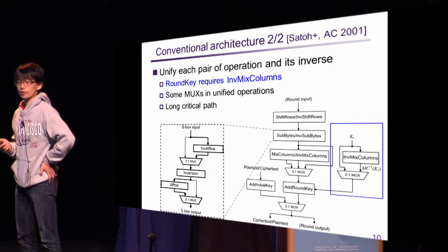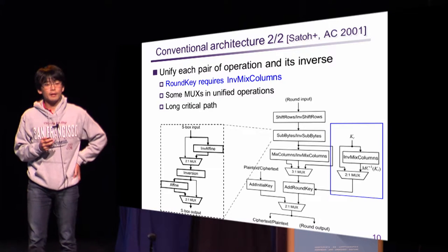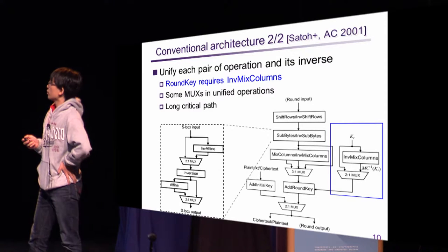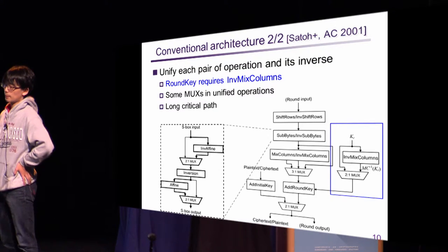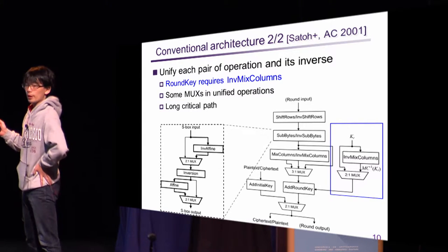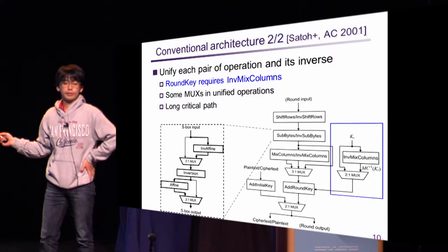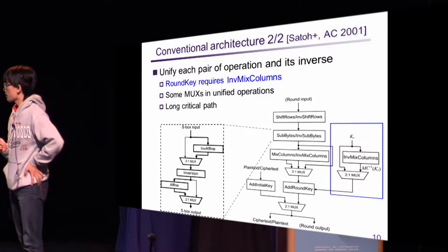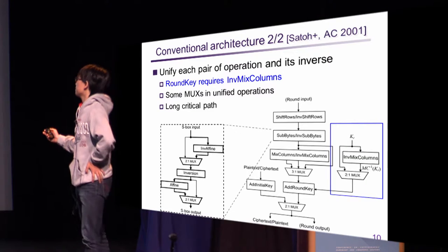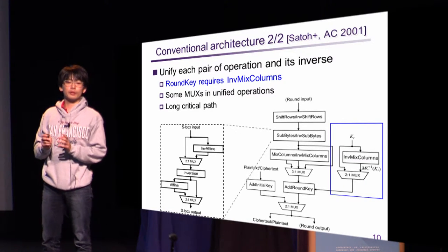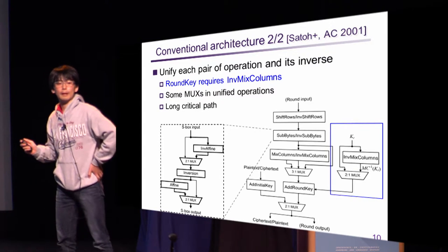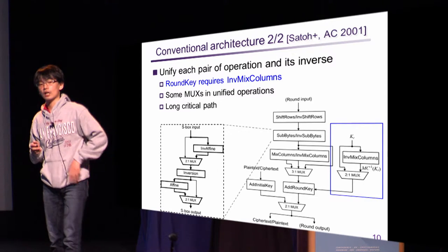This is the second approach by Sato et al. In this architecture, ShiftRows, SubBytes, MixColumns, and AddRoundKey are unified with their inverse functions respectively. To do so, decryption operations were reordered to be the same as encryption. Because the number of components is less than the first approach, this architecture will have smaller area. However, as a result of operation reordering, AddRoundKey requires InvMixColumns, which can be overhead when doing on-the-fly key scheduling. In addition, sub-multiplexers are required in unified operations in addition to path selectors. For example, a typical unified S-box contains two multiplexers. Furthermore, in unified operations, encryption and decryption paths are connected in a partially serial manner, which increases critical delay.